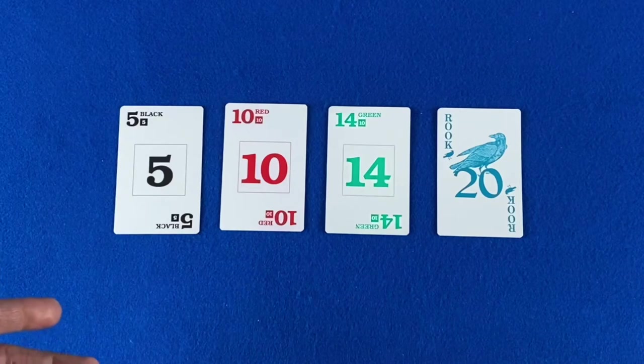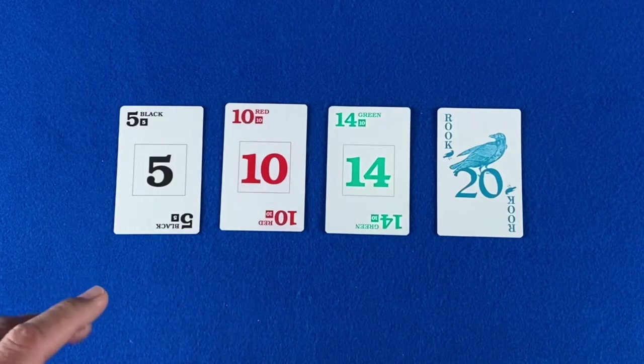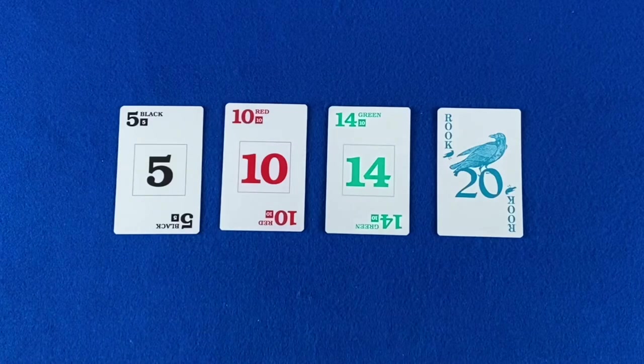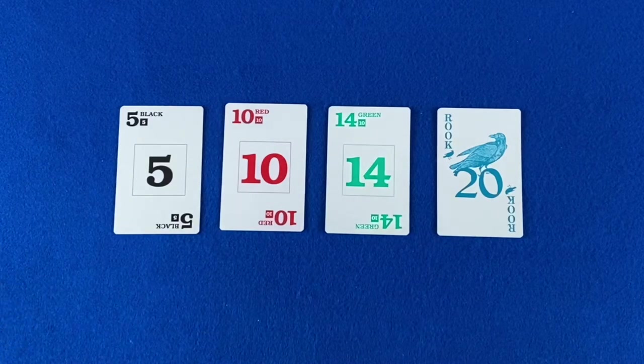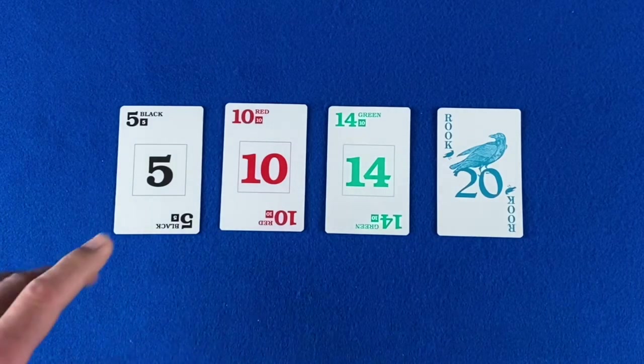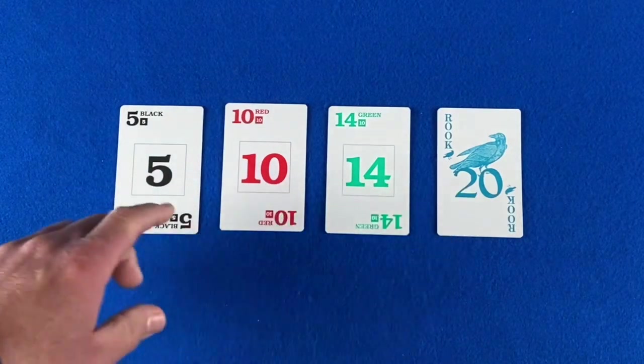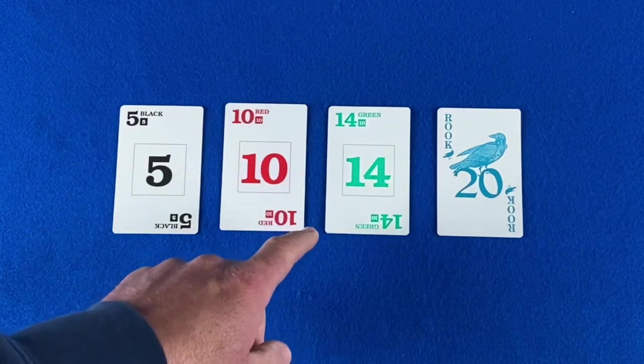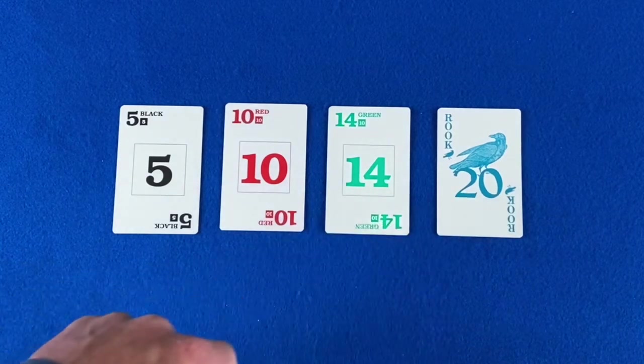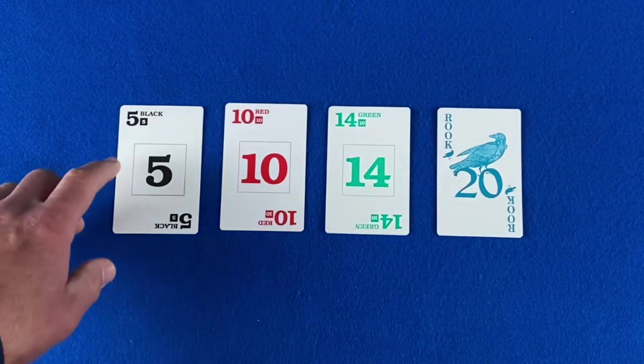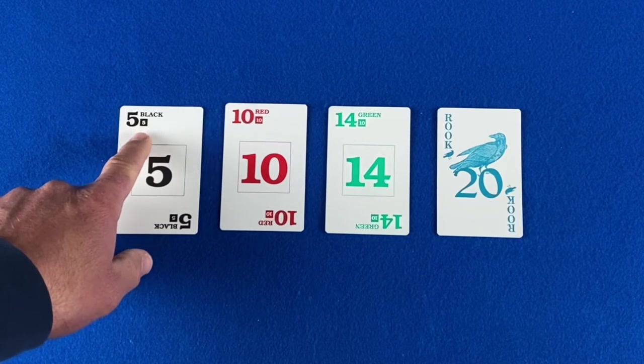After setup is complete, players will go through a bidding round. Players bid on how many points they think they can capture during the round. Points are earned by capturing count cards. Fives, 10s, 14s, and the bird card are all count cards. The point value is placed up in the corner of the card.